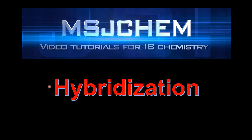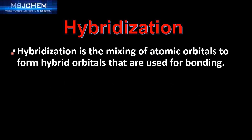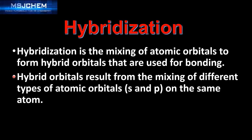This is MSJChem and in this video I'm going to look at hybridization. Hybridization is the mixing of atomic orbitals to form hybrid orbitals that are used for bonding. Hybrid orbitals result from the mixing of different types of atomic orbitals — that's S and P orbitals — on the same atom.